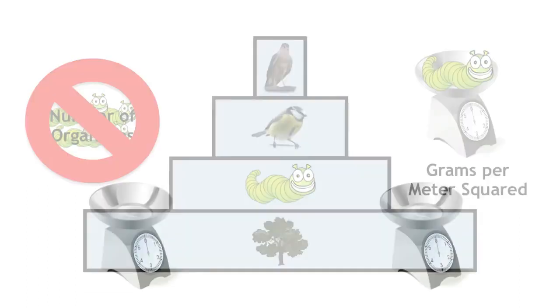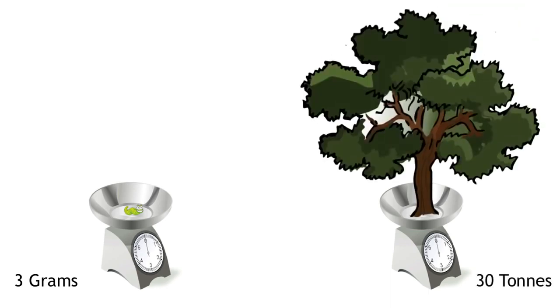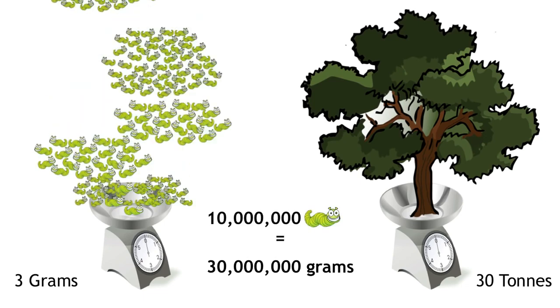Think about it this way. One caterpillar weighs about 3 grams. One oak tree weighs about 30 tons, which is 30 million grams. So that's 10 million caterpillars to equal the mass of one oak tree.